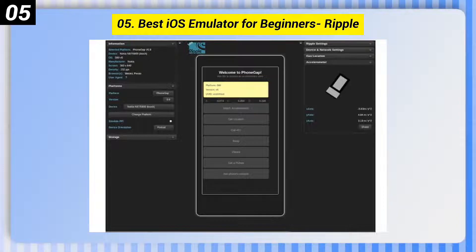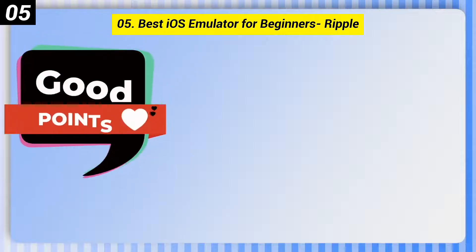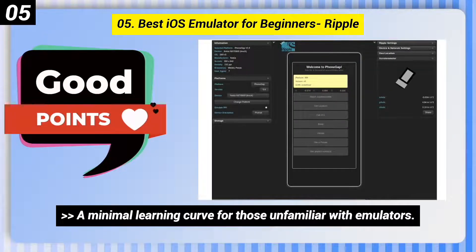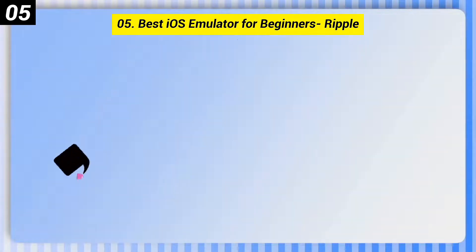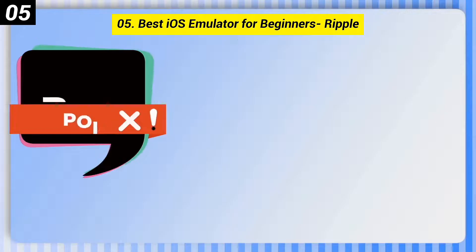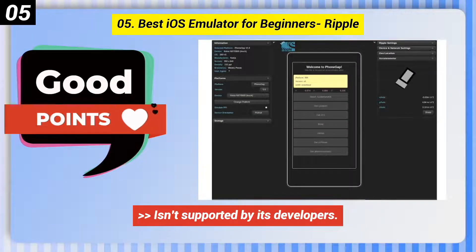Number 5: the best iOS emulator for beginners is Ripple. Here are some good points: it has a minimal learning curve for those unfamiliar with emulators, and it is ideal for testing websites for iOS devices. On the downside, it hasn't been updated in a few years and isn't supported by its developers.